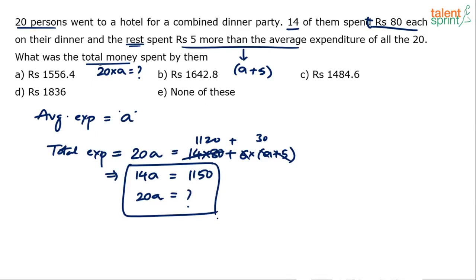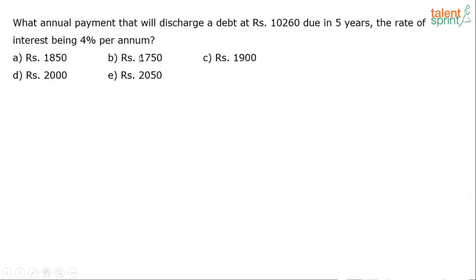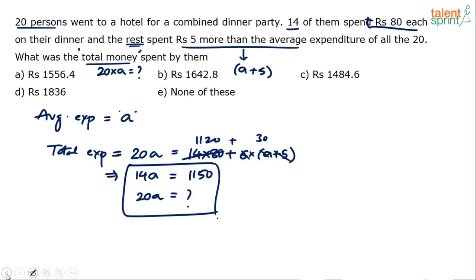From this equation we have found 14a is 1150. 20a should be equal to what? Why are we calculating 20a? Because he's asking us to find out total money. They can also ask you to find out the average money spent—that will be a. Total money spent will be 20a. So what is the question here? Simplify this to get the answer.